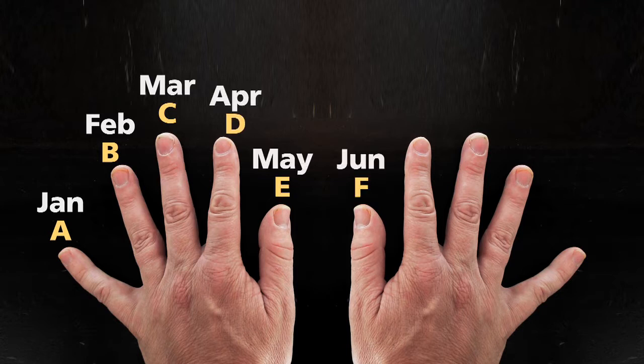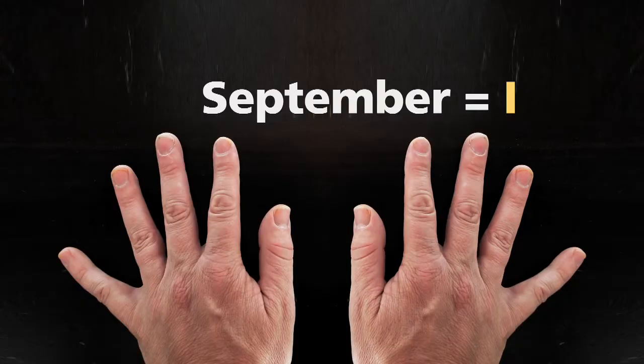A, B, C, D, E, F, G, H, I is the ninth month which is September. It's as simple as that.